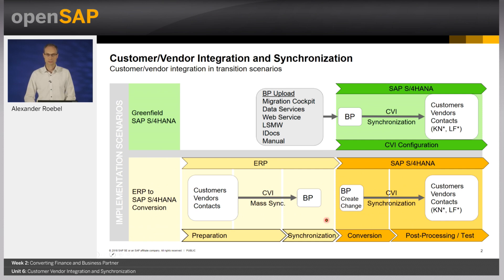What does 'all' mean? All means 100% of them, in all clients of the respective system. If there is even one customer, vendor, or contact person that has not been linked to a Business Partner, the S/4 conversion stops. Let me briefly introduce what is required in this conversion scenario — in the next slides I will highlight some more details.